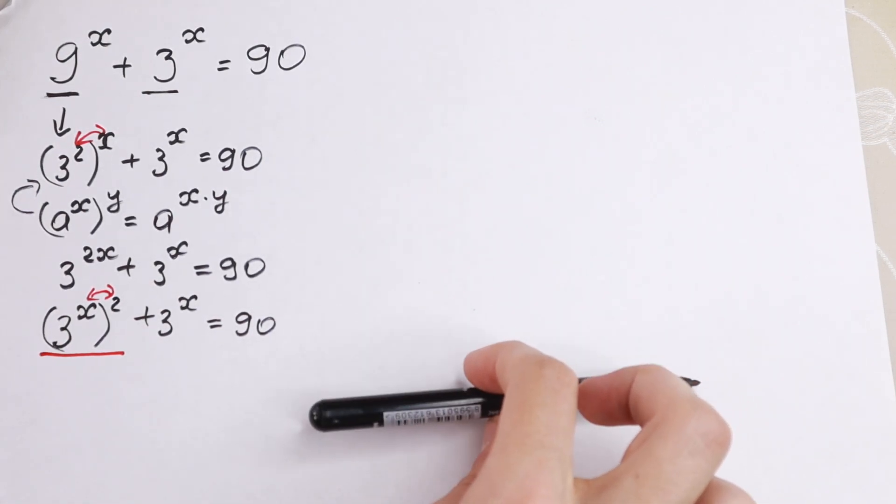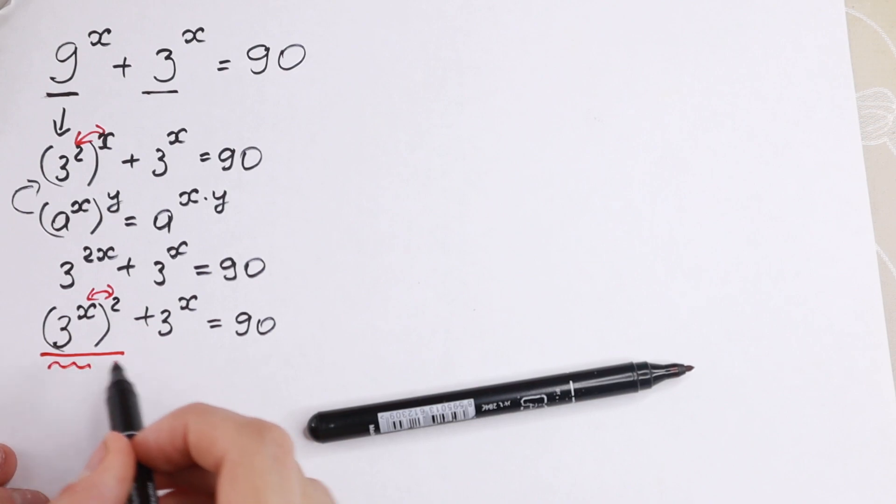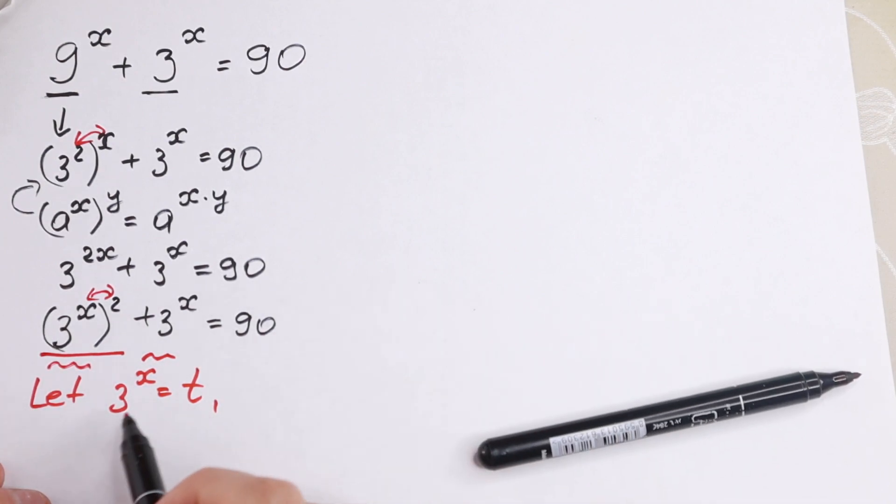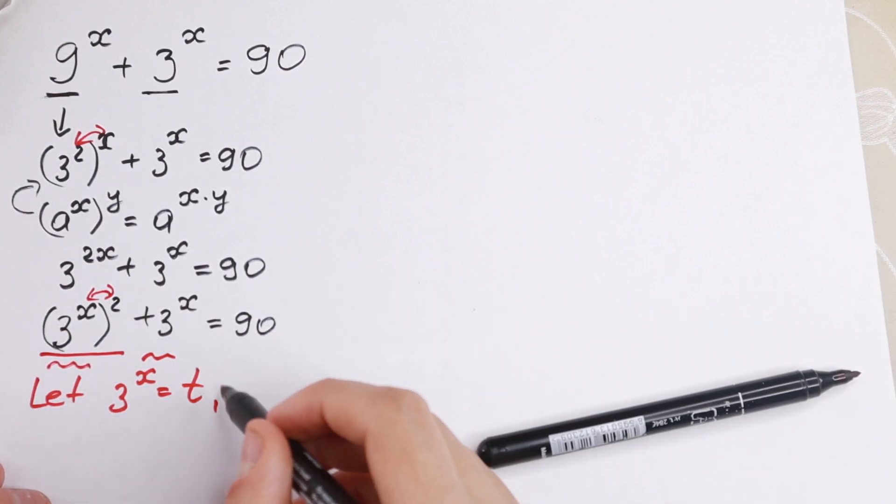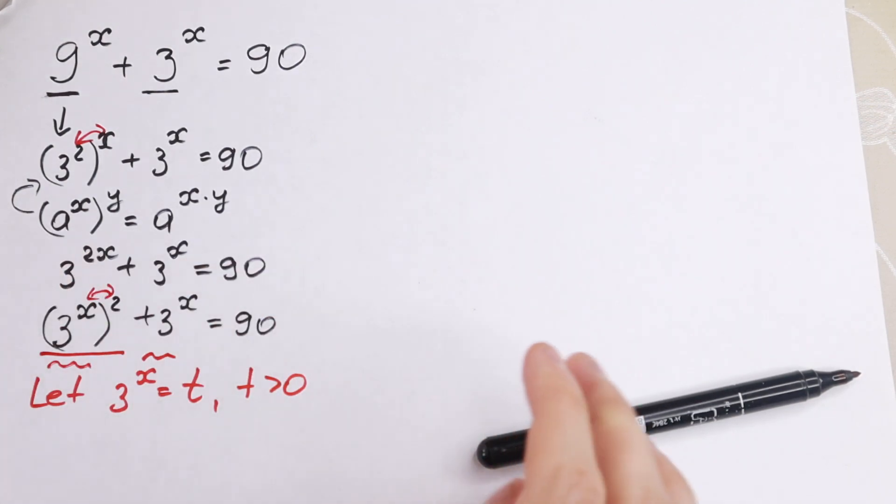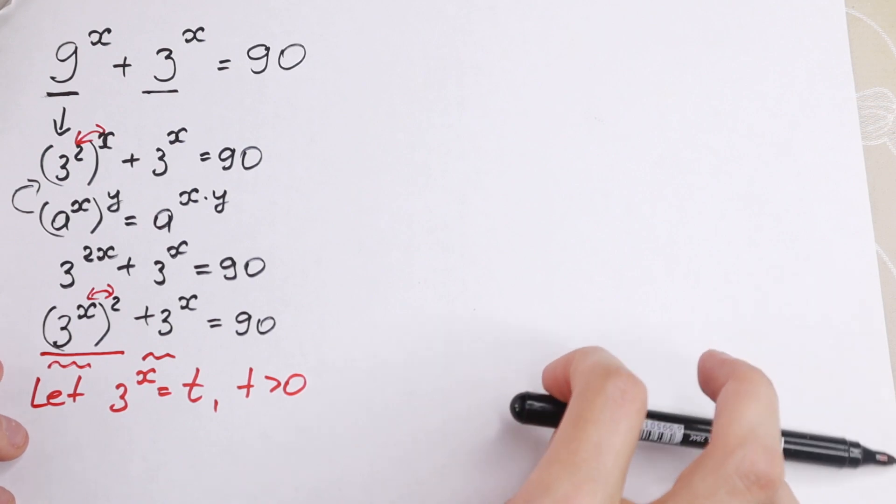What we're going to do next. Take a look. We have 3 to the power x right here and right here. So we can let a substitution 3 to the power x equal to, for example, t and 3 to the power x is an exponential function. So t is greater than 0 because exponential function does not get any negative value.